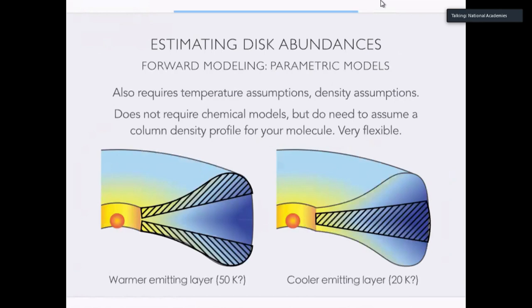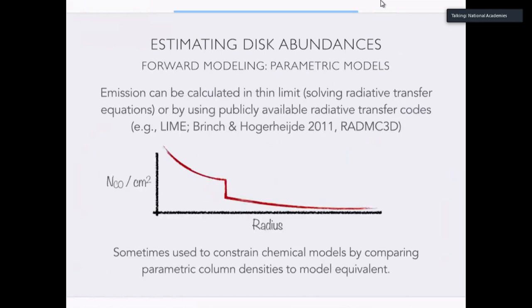Another thing you can actually do to try and extract information about abundances in the disk is you can just take the next level of complexity and assume a parametric model. So this allows you to say, I expect my molecules to show up in the surface of the disk, since down here they're probably frozen and up here they're probably dissociated. And so this also requires some temperature assumptions. You have to assume what your radial distribution of molecules is, but it doesn't require any complex chemical modeling. And so it can be very quick. You can MCMC it. And so you can even get uncertainties on your estimates for different column densities. It's a very flexible means to extract information from your data. But the problem is it can be sometimes not unique. So here's just two different examples of a warm emitting layer or you could assume it comes from a single cold emitting layer and have it be something like 20 Kelvin gas.